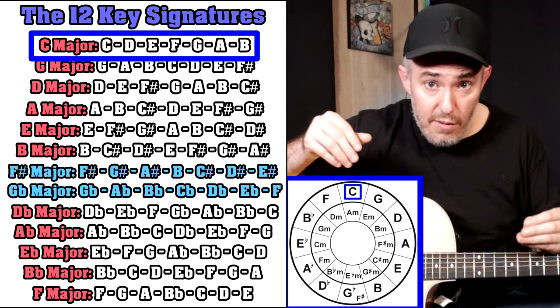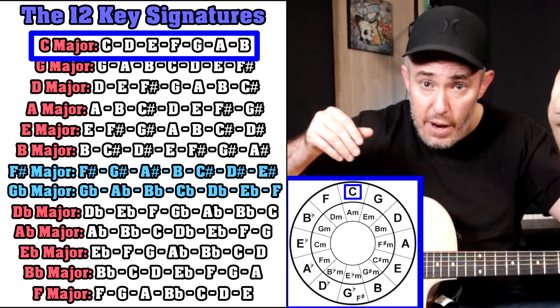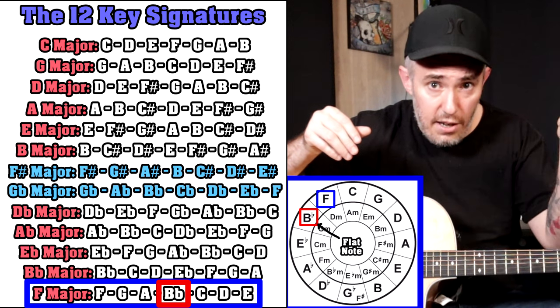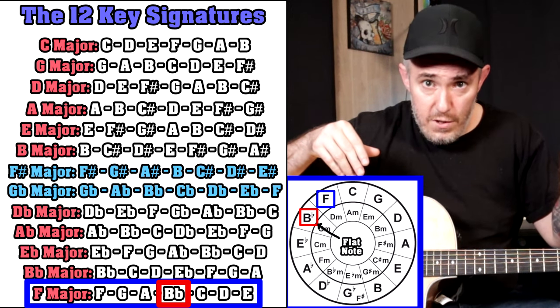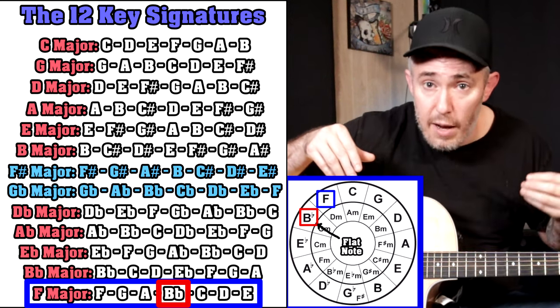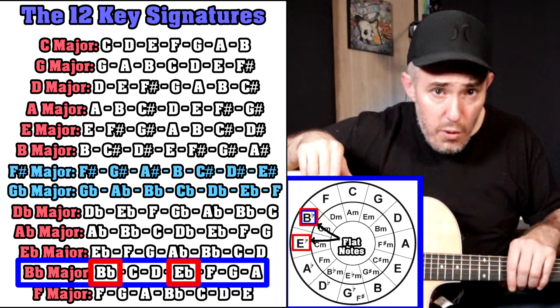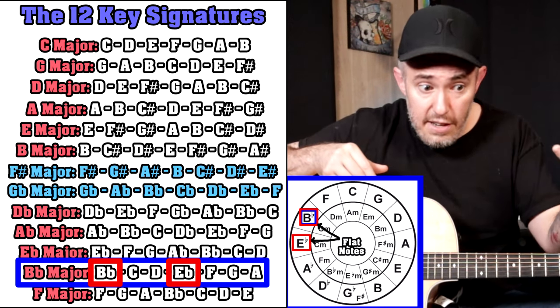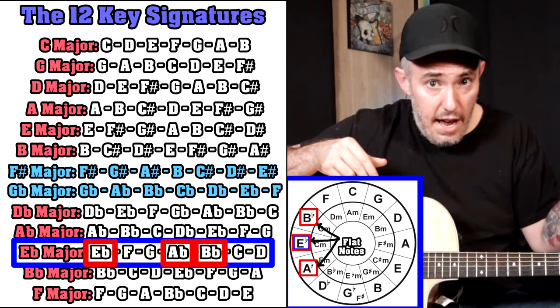For flat keys: C major has no sharps or flats. Moving counterclockwise, F major has one flat — B flat. The key of B flat major slash G minor has two flats: B flat and E flat. Moving along, E flat major slash C minor has three flats: B flat, E flat, A flat. The pattern continues as you move counterclockwise around the circle — that's how you determine which notes are made flat in any given key.